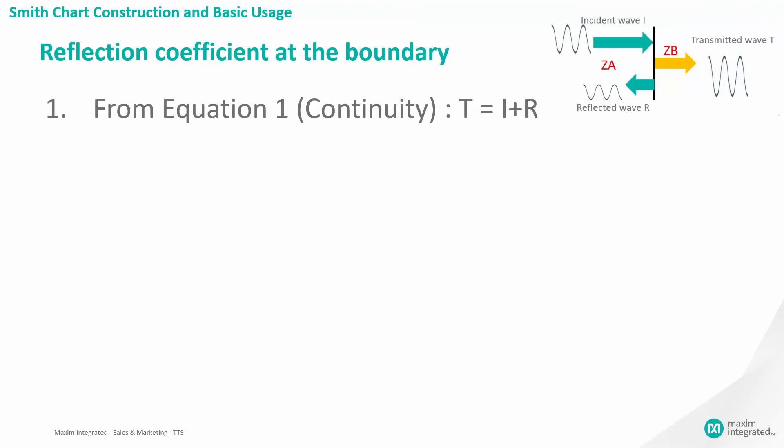Next, we need to standardize the equation to the incident wave. To do this, we will divide the equation by I. So we are left with T divided by I equals I divided by I plus R divided by I. The standardized equation might look like small t equals 1 plus small r, where small t is the ratio of the wave transmitted to ZB, and small r is the ratio of the wave reflected back to ZA.